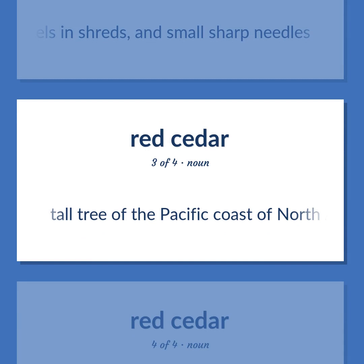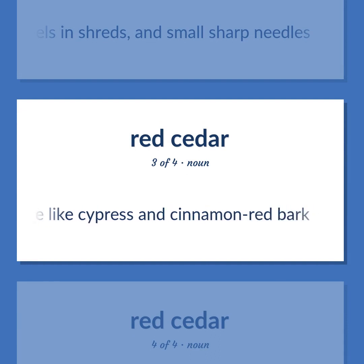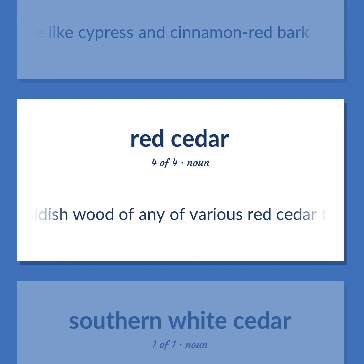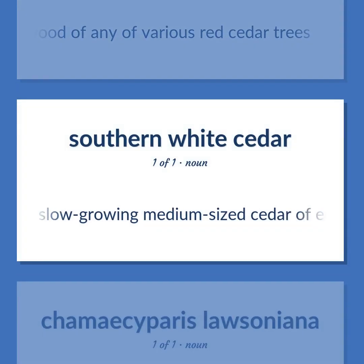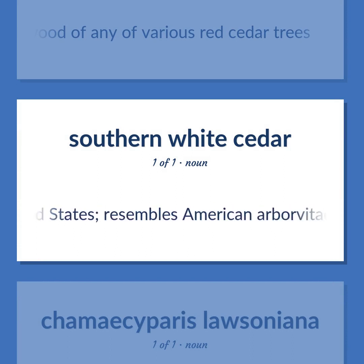Tall tree of the Pacific Coast of North America having foliage like cypress and cinnamon-red bark. Fragrant reddish wood of any of various red cedar trees. Slow-growing medium-sized cedar of the East Coast of the United States, resembles American arborvitae.